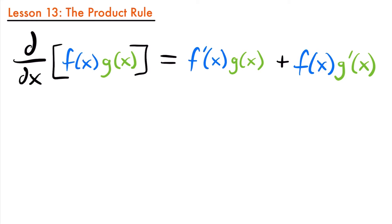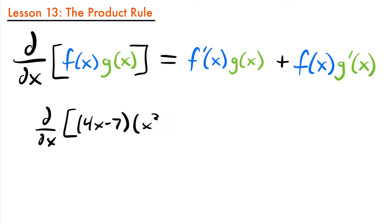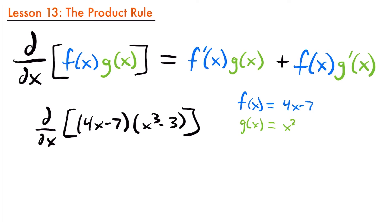Let's see what this looks like with an example. If we want to find the derivative of the function (4x minus 7) times (x cubed minus 3), we have two functions: f of x is equal to 4x minus 7, and g of x is equal to x cubed minus 3. Taking the derivative of each: f prime of x is going to be equal to just 4, because the derivative of 4x is 4 and the derivative of negative 7 is 0.